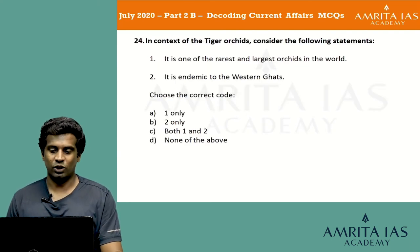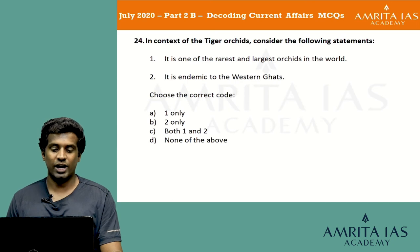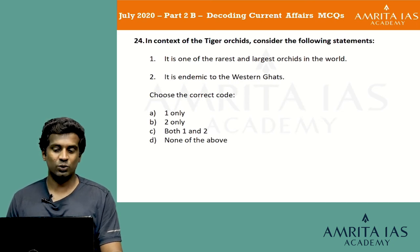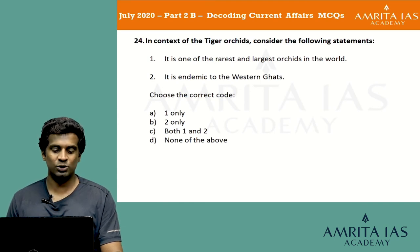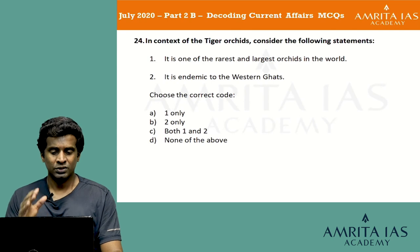In context of tiger orchids, consider the following statements: 1) It is one of the rarest and largest orchids in the world. 2) It is endemic to the Western Ghats. Choose the correct code: option A 1 only, option B 2 only, option C both 1 and 2, option D none of the above.